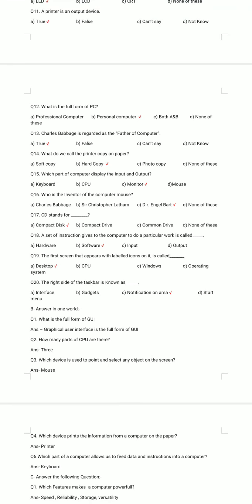Question number 20. The right side of the taskbar is known as dash. A. Interface. B. Gadgets. C. Notification Area. D. Start Menu. The correct answer is option C: Notification Area.